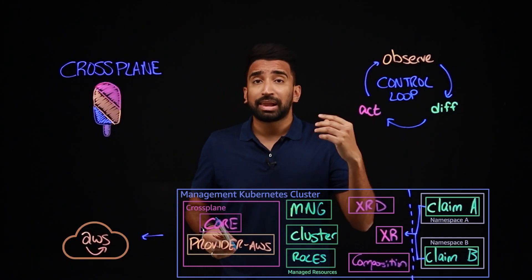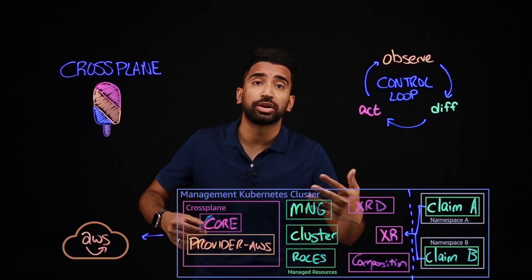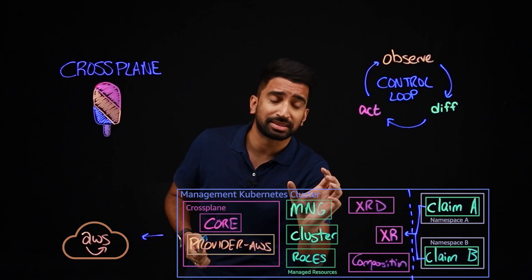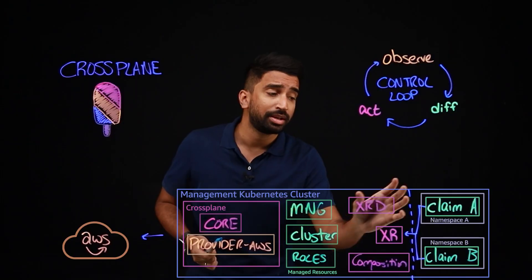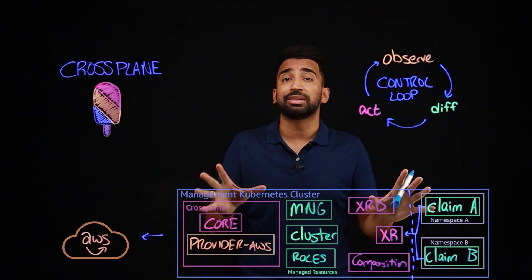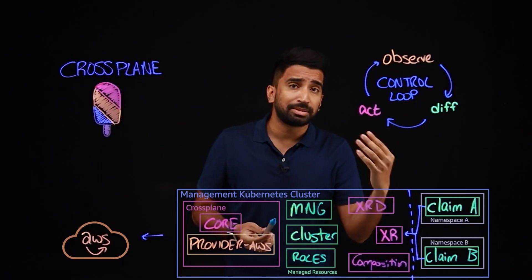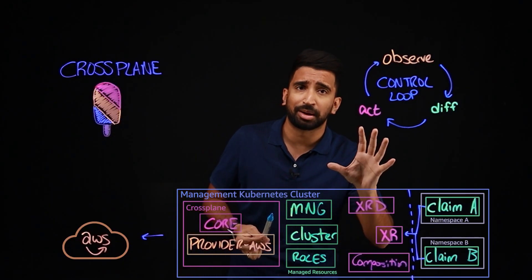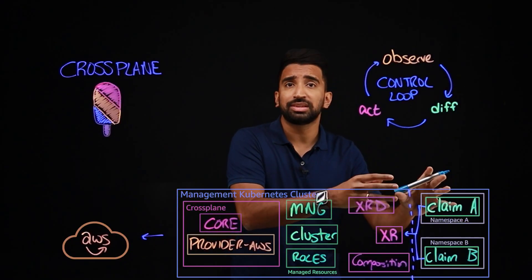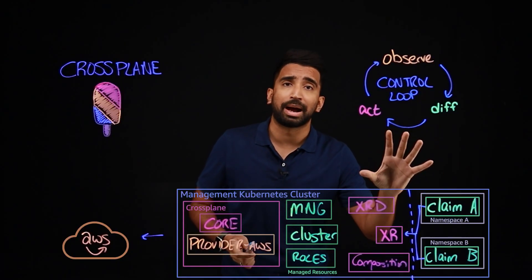Here's a simple example. The platform team may decide that the IAM roles for the cluster should be immutable for security purposes — you don't want the app teams to change them. But they want to expose the ability to customize the size and the machine type of the managed node group, so the app team can customize those. Now this architecture, although it seems a little bit confusing, is ideal for platform teams and application teams. As an app developer, you can simply use the composite resource definitions and compositions that your platform team has deployed to your Crossplane cluster. And with claims, they're scoped to namespaces, so you can align them to teams or logical groupings for applications.